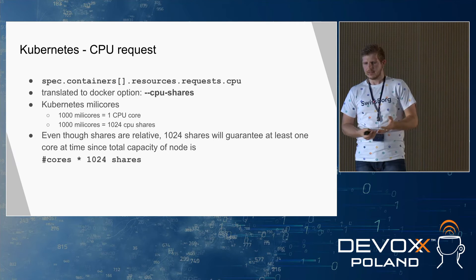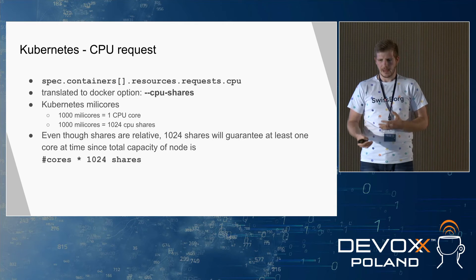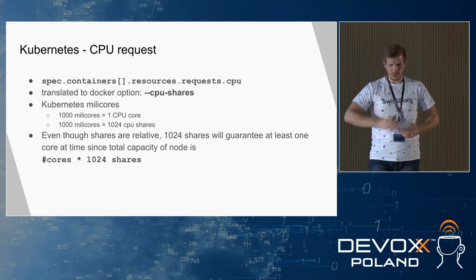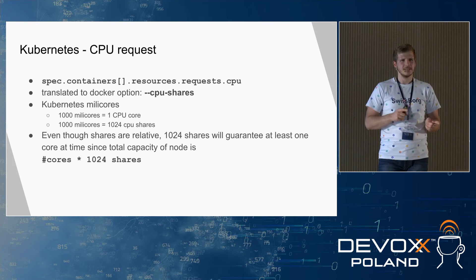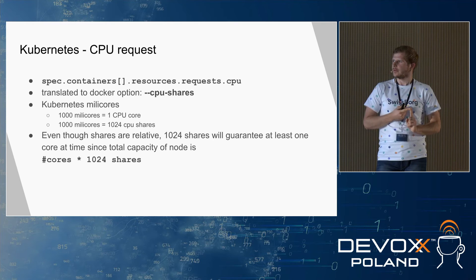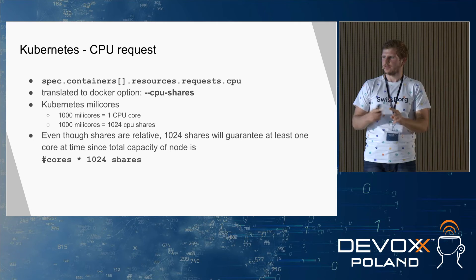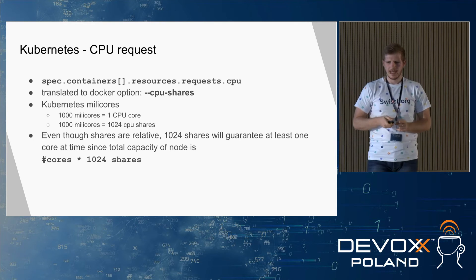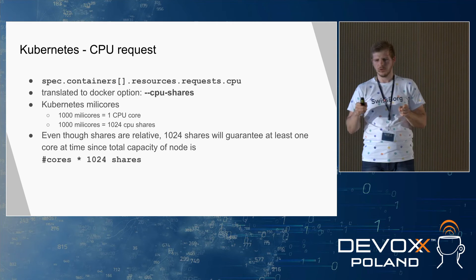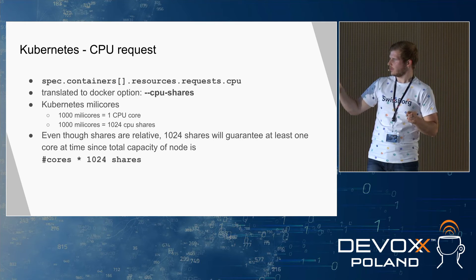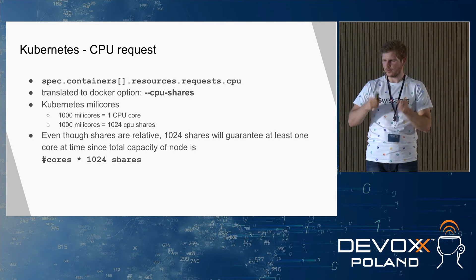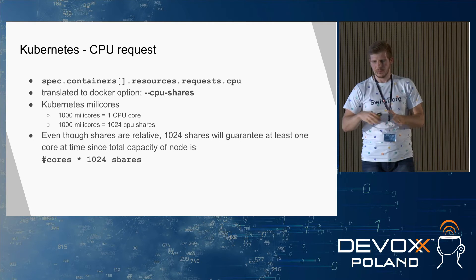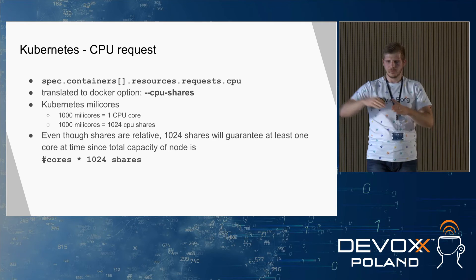Kubernetes uses a notion of millicores: 1,000 millicores means one CPU. This translates to Docker as 1,000 millicores = 1,024 CPU shares. CPU shares is purely relative and depends on the total sum of shares of all processes on the node. Kubernetes assures that on a given node, we don't put pods with shares bigger than the number of cores times 1,024 — meaning if you assign 1,024 shares to a pod, it's guaranteed to get one CPU at a time even under maximum load.